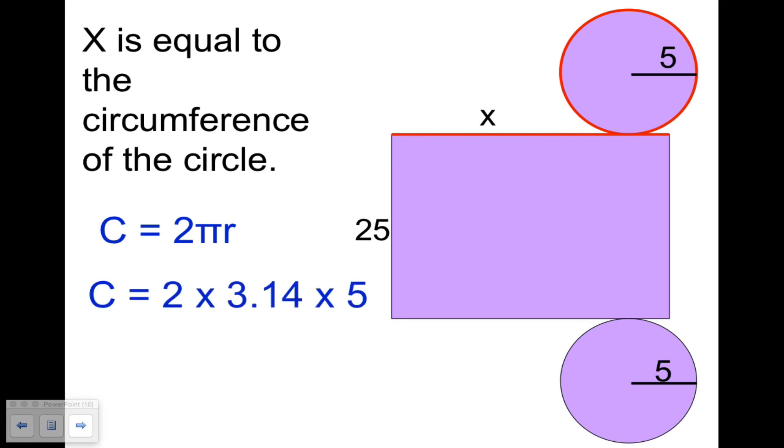The radius here is 5. So we're going to have 2 times 3.14 times 5. Take a moment on your calculator and see what you get. I bet it's 31.4 because I see 2 times 5 is 10, and 10 times 3.14 is 31.4. Okay, that's the circumference, so we'll replace x with 31.4.